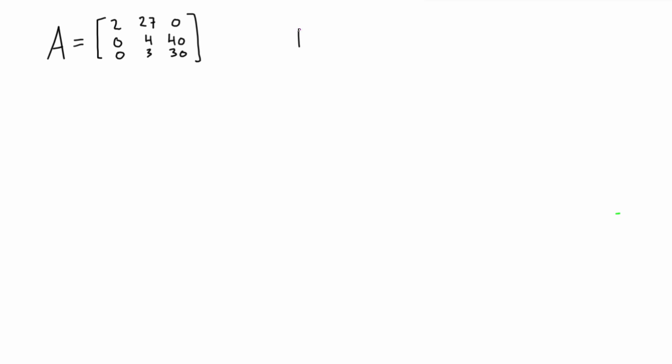So the way that we write the characteristic polynomial, we denote it like a function of lambda, and it's really just equal to the determinant of this matrix that we call A minus lambda I.